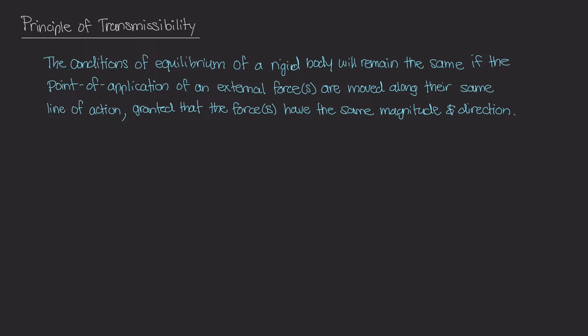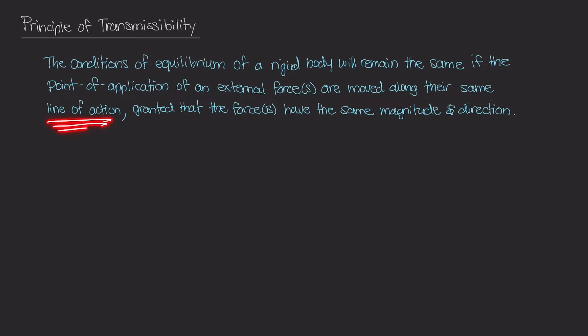The principle of transmissibility basically states that the conditions of equilibrium of a rigid body will remain the same if the point of application of any external force or forces are moved along their same line of action, granted that the force or forces have the same magnitude and direction.